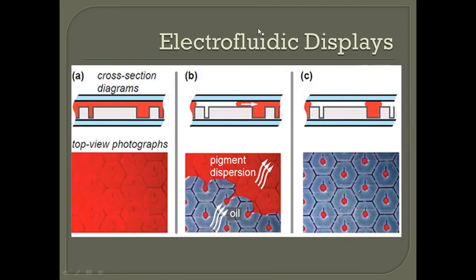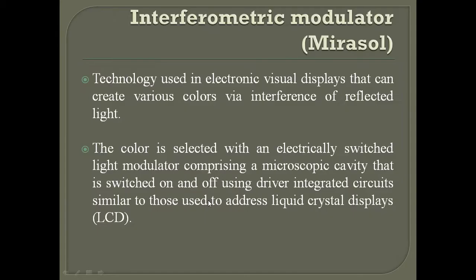As a result, the electrofluidic display takes on color and brightness similar to that of conventional pigment printed on paper. In the cross-sectional diagram, the pigment dispersion is shown being pulled from its reservoir by the applied voltage, where it spreads and resides to produce the electronic paper display.